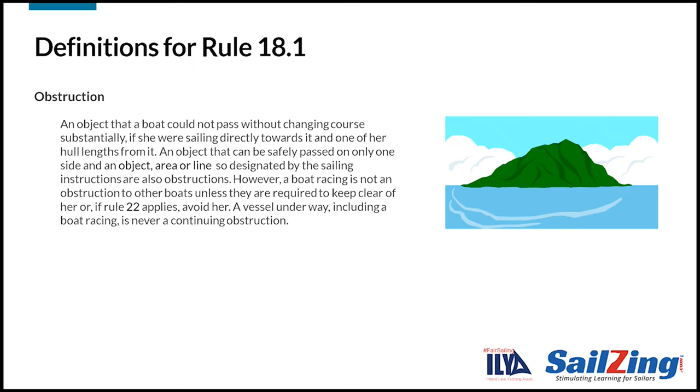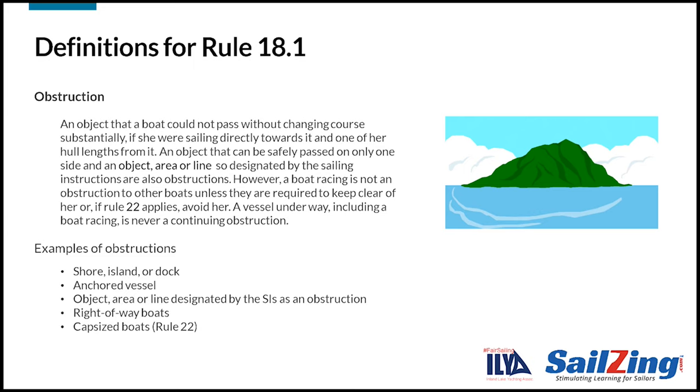Here's the definition of an obstruction. As you can see, it's rather long, and for Rule 18.1, the definition is only important when a mark is also a continuing obstruction, which is rare. Some examples include a shore, island, or a dock. An anchored vessel. Any object, area, or line designated by the sailing instructions as an obstruction. Right-of-way boats. And capsized boats. We'll cover the definition of obstruction in more detail when we get to Rules 19 and 20.